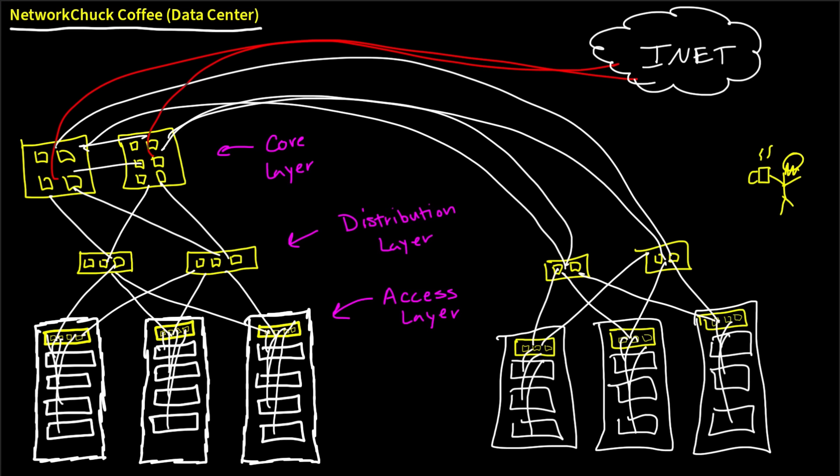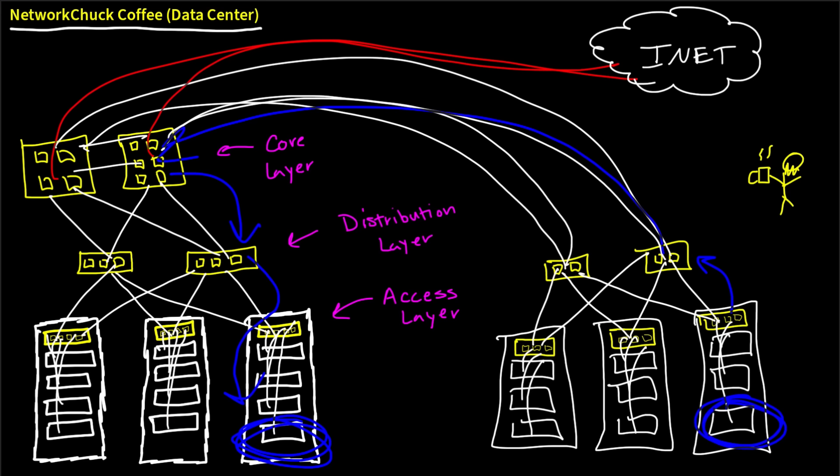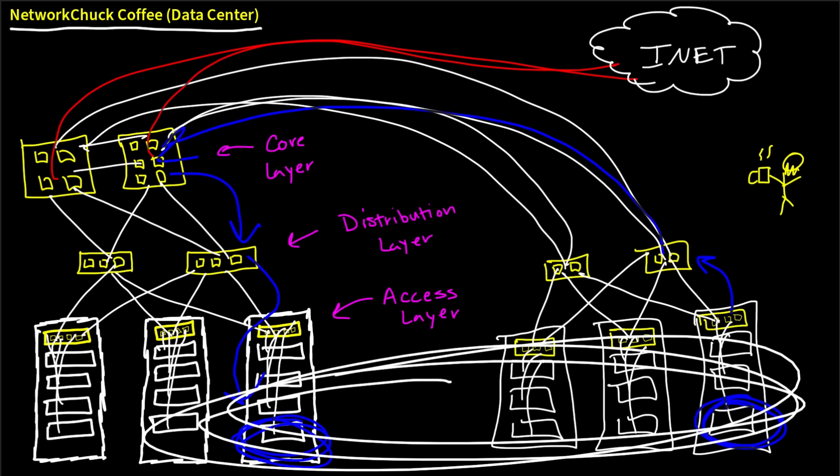East-west traffic accounted for the majority of our traffic. In fact, it's 80% of our traffic in our data center, and it has the biggest impact on the way our network performs. So with our three-tier design, if one server wants to communicate with another server, because of our new virtualization technologies with three tiers, it's going to go from our top of rack switch to our distribution layer, then hop over to our core layer, then down to the distribution layer, and then to the top of rack switch, and finally to that server. That's way too many hops for communication that needs to happen crazy fast.